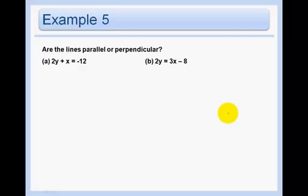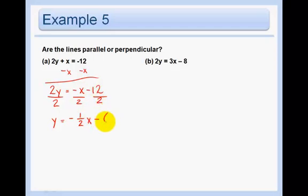Example 5 says, are the lines parallel or perpendicular? We can't do anything until we get it in y equals mx plus b form. So let's do that here. We have to get a y on a side all by itself. Get the x over on the other side. And then divide everything by 2. So we have y equals negative 1 half x minus 12 divided by 2 is 6.